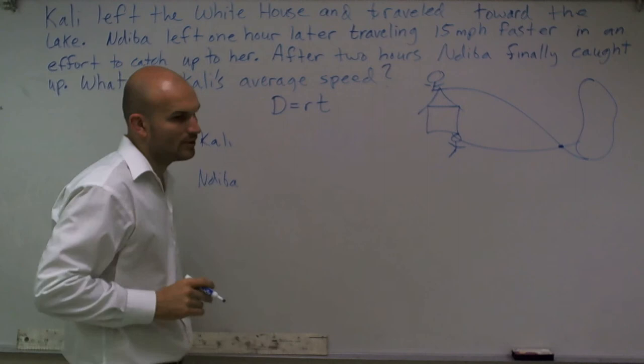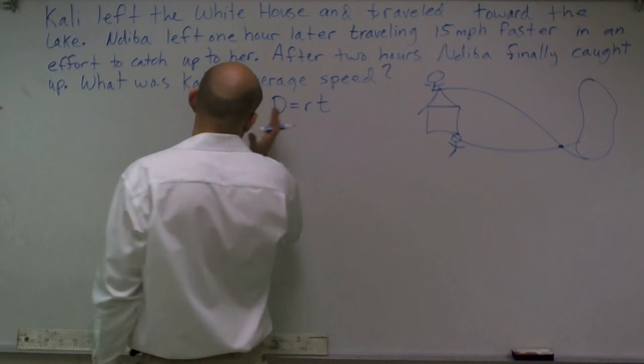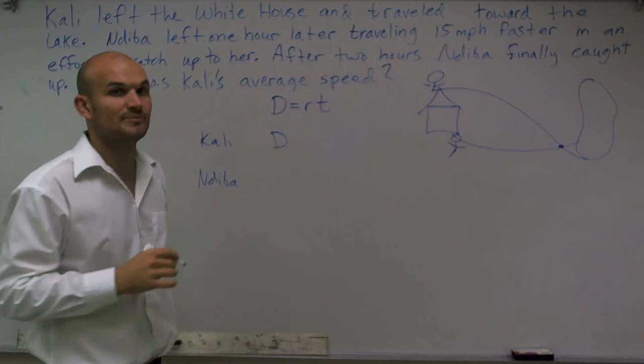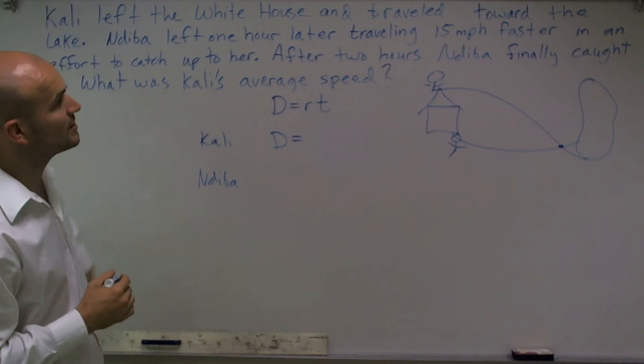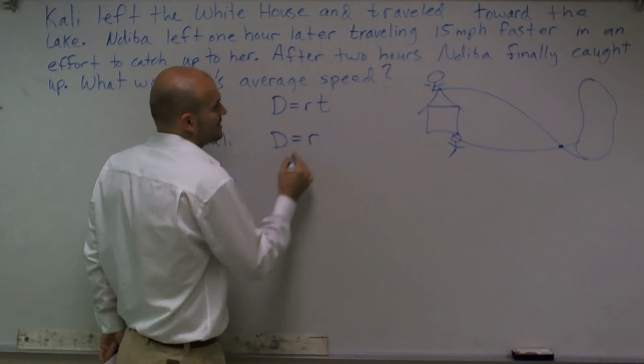So for Callie, I don't know what the distance is that she traveled. When I'm looking at this, I know that's where they met, but I don't know what that distance is. So the distance traveled right now is just going to be D. I also don't know Callie's rate. We know that Nadeeba traveled 15 miles per hour faster, but I don't know faster than what. So I'm just going to keep that as R.